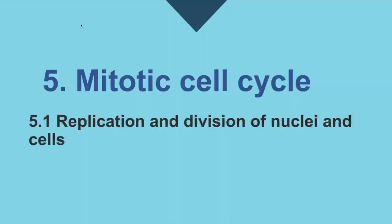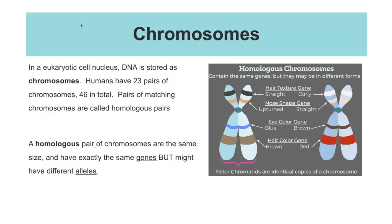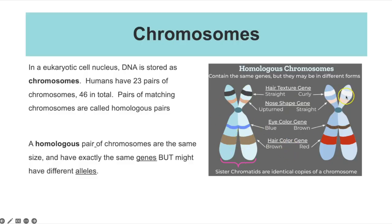Topic 5 is the mitotic cell cycle and we're beginning with replication and division of nuclei and cells. In eukaryotic organisms the DNA is stored as chromosomes. Humans have 23 pairs of chromosomes, which means 46 in total. You have two copies of every chromosome and those matching pairs are known as homologous pairs. Homologous means the same — a homologous pair of chromosomes are two chromosomes that are the same size and have exactly the same genes but may have different alleles.